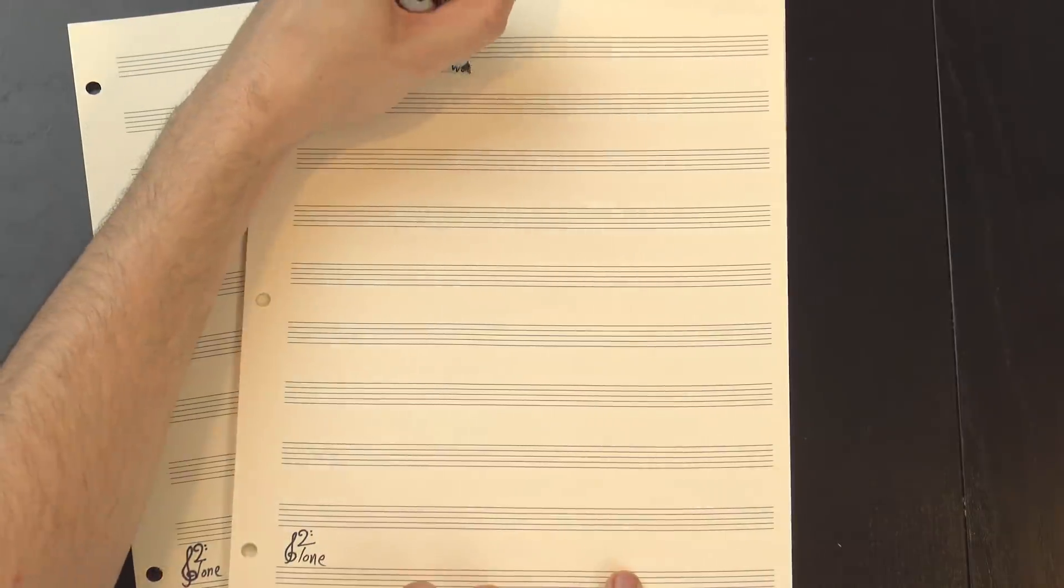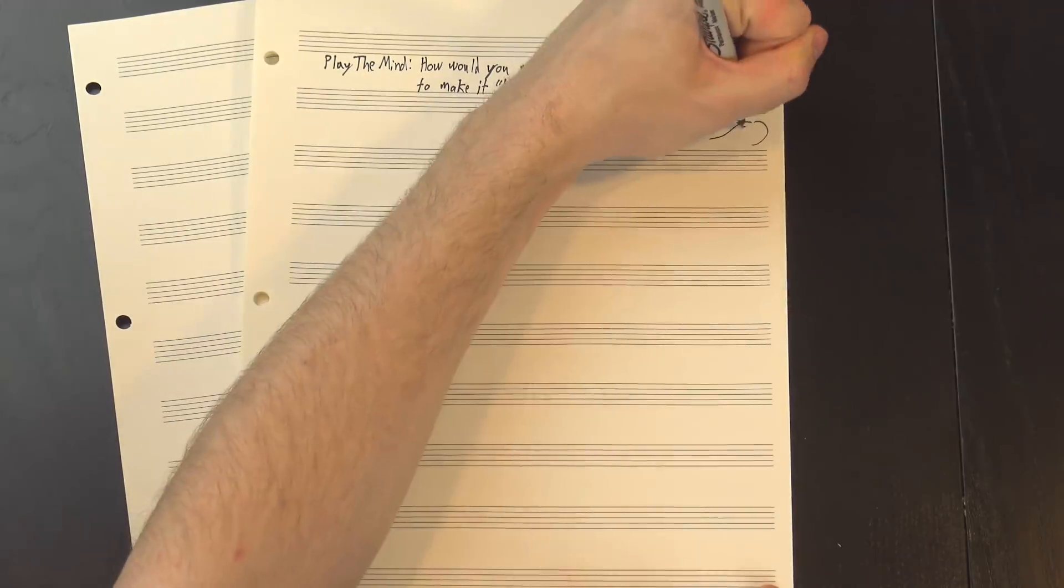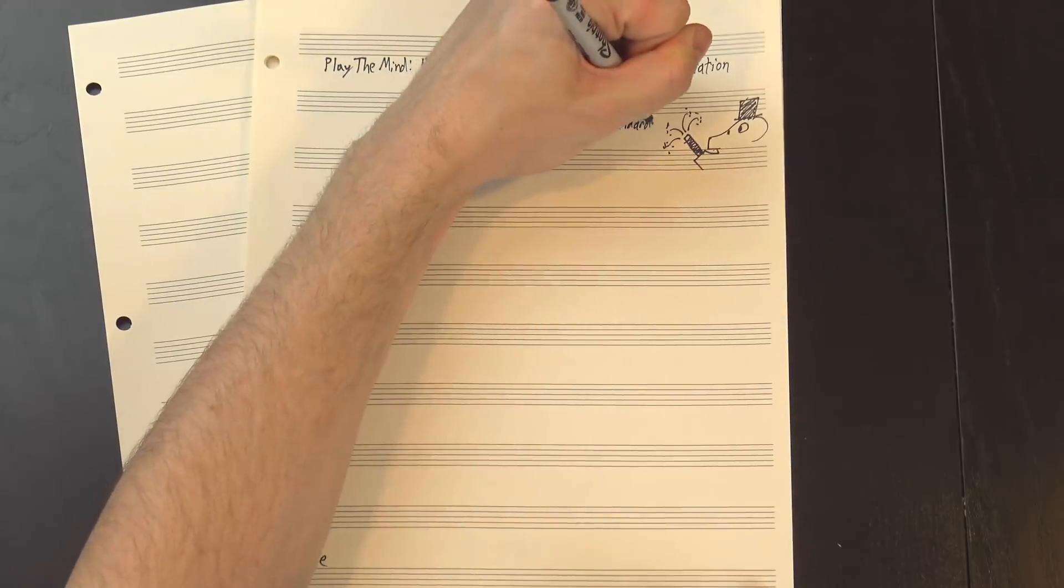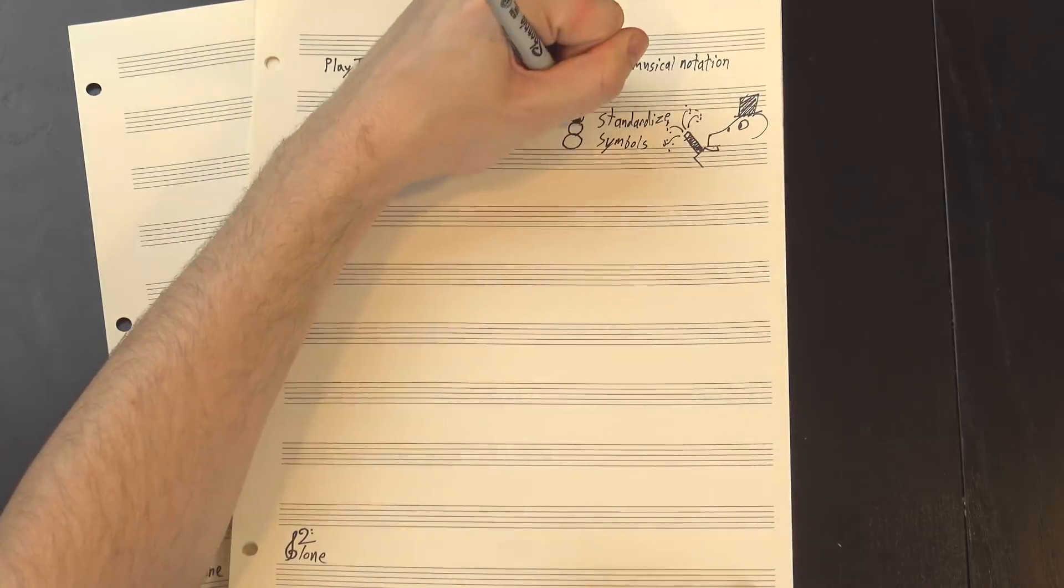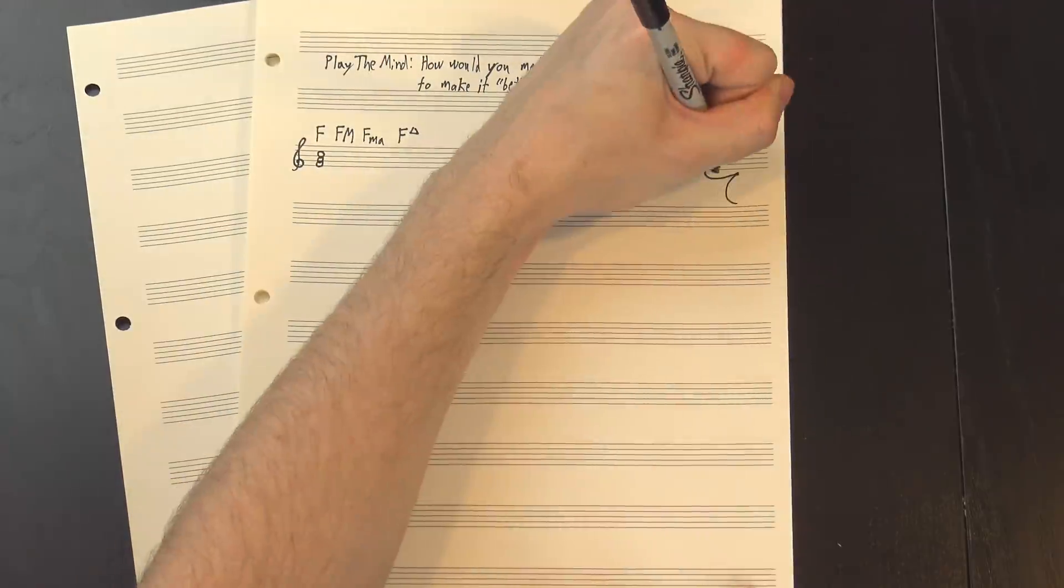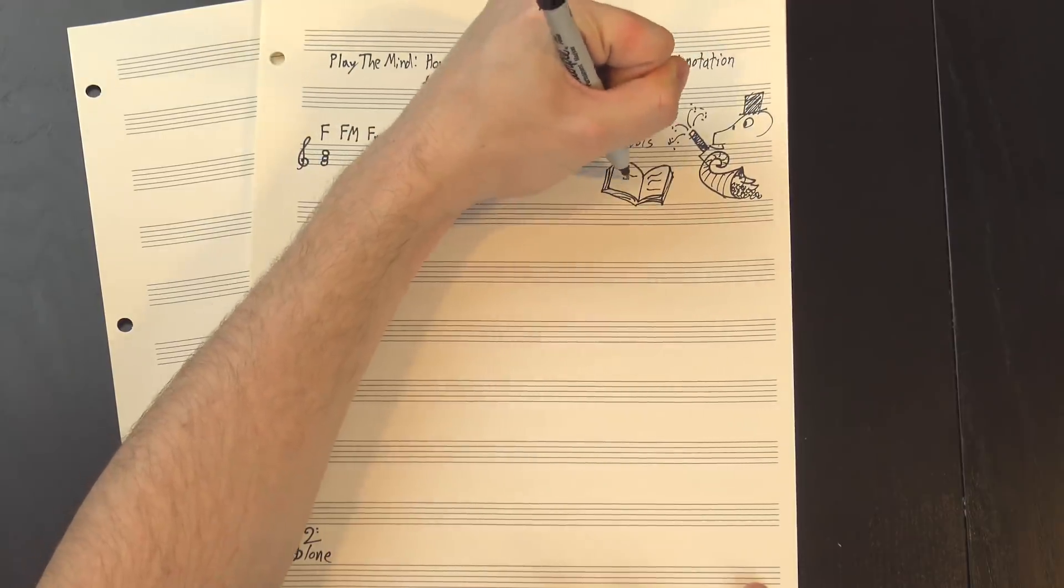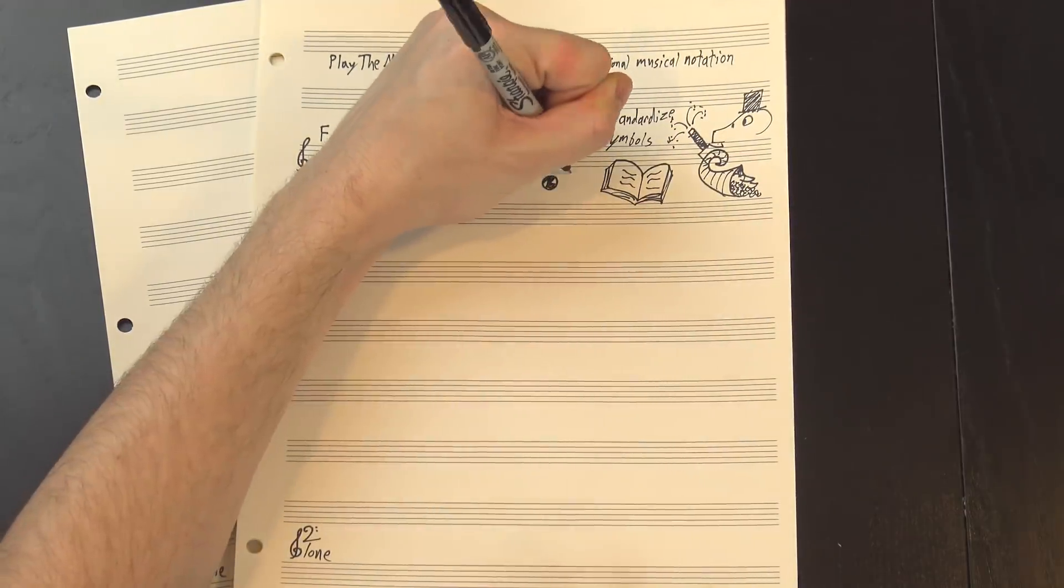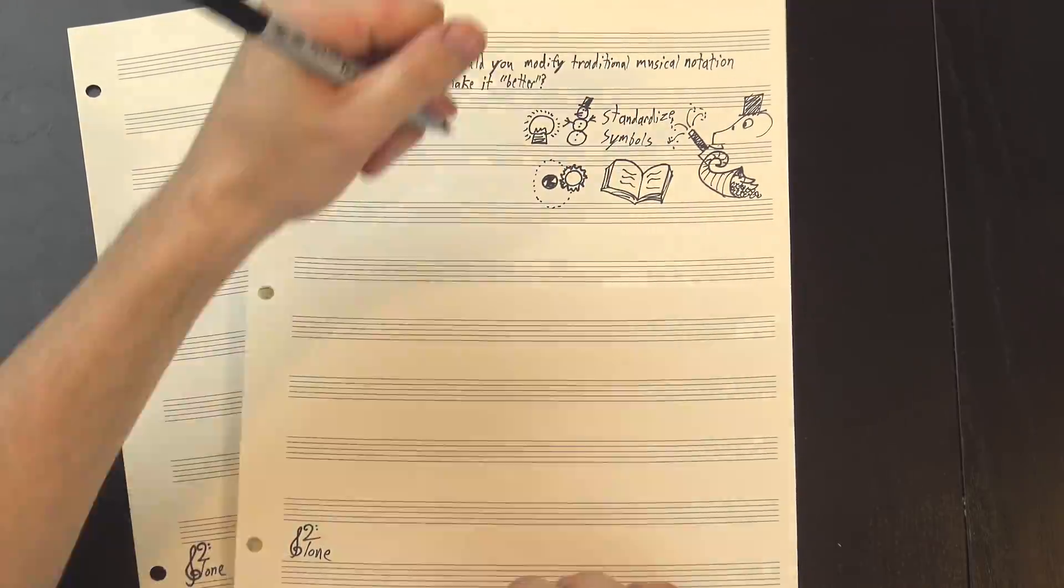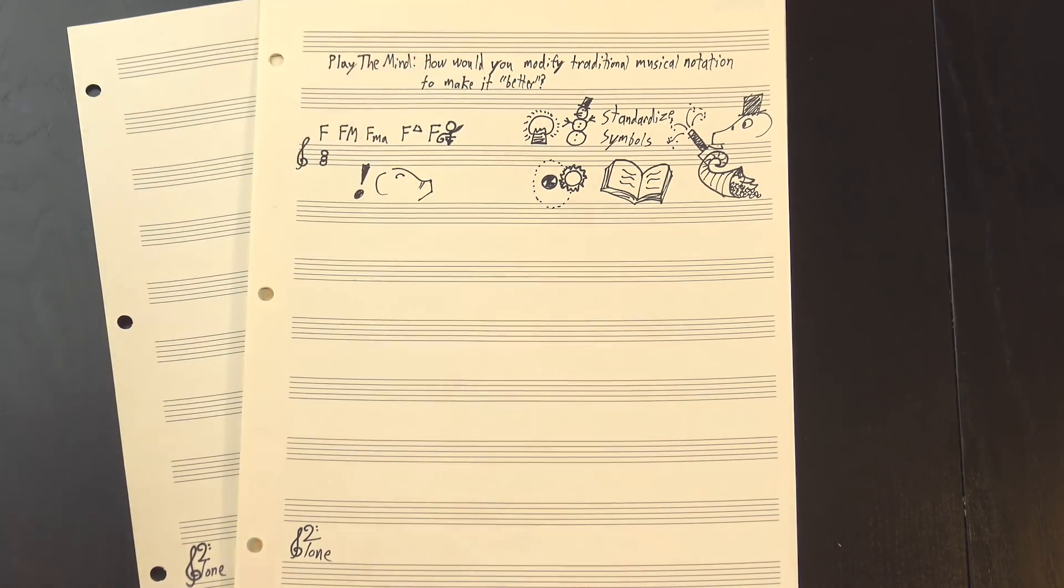Plus, having perfect pitch makes it much more annoying to listen to things that are slightly out of tune, and let's be honest, most things are. Still, though, it does seem like it'd be fun, and if I had the option, I probably wouldn't turn it down. Next question. Playthemind asked, how would you modify traditional music notation to make it, quote, better, unquote. If I could wave a magic wand and make every musician on earth change the way they notate, the first thing I'd do would be to standardize symbols, especially for chords.